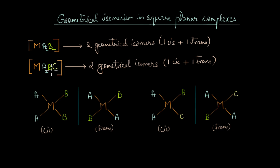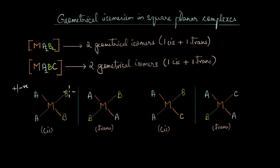MA2B2 and MA2BC are general forms of writing different types of square planar complexes. We have not taken into account the charge of the complex here — the complex may have a positive, negative, or neutral charge depending on the metal's oxidation state and the charge of the ligands. When talking about specific compounds, you should account for the charge, but the general form is acceptable when discussing the type of complex.